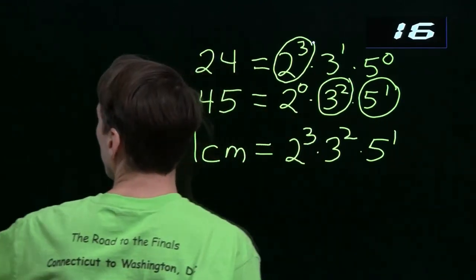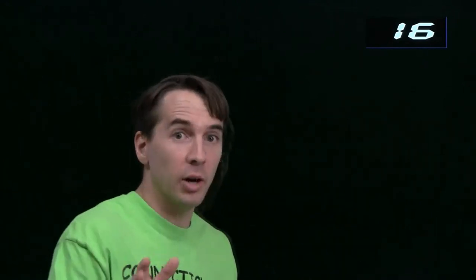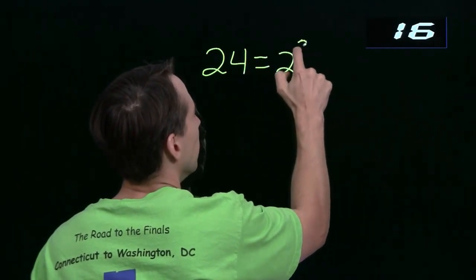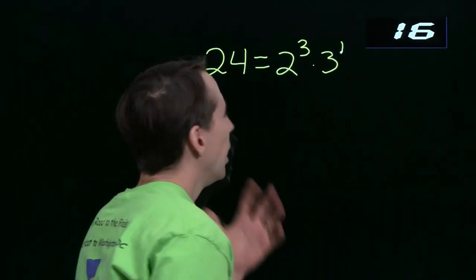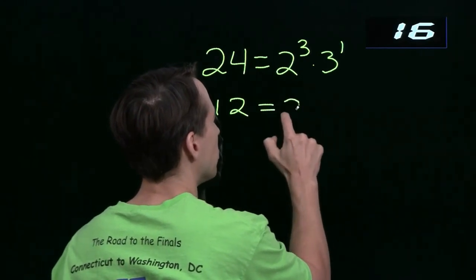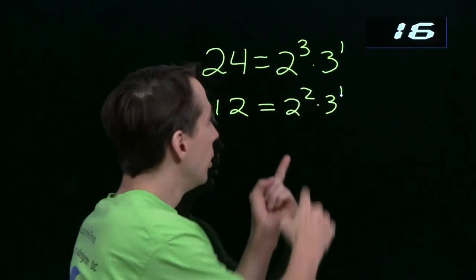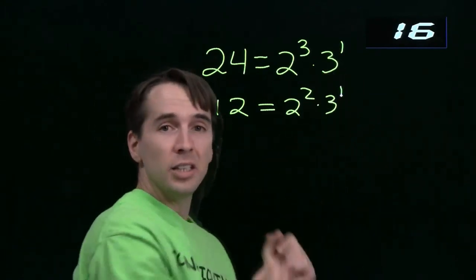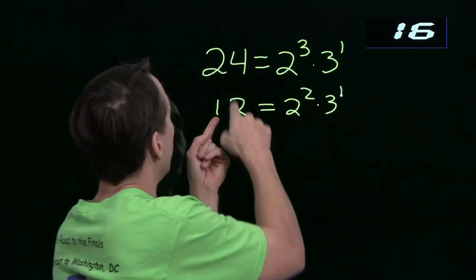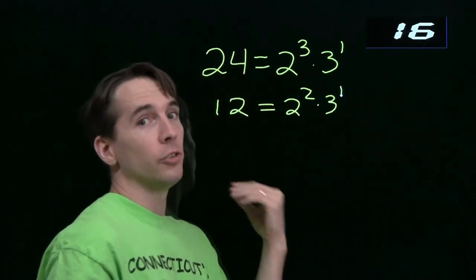That works really nicely for the least common multiple. Maybe prime factorizations will help us with divisors too. Let's look at how prime factorizations help us with divisors in general, starting with 24 again — that's 2 cubed times 3 to the first. For example, 12 is a divisor of 24, and its prime factorization is 2 squared times 3 to the first. From the prime factorizations, we can see that 24 is a multiple of 12, because 24 has at least two 2s and at least one 3, with no other primes to worry about. So 12 is a divisor of 24.